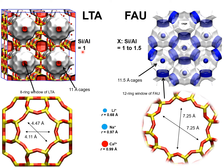The silicon-to-aluminum ratio in LTA zeolites commonly used for air separations is approximately 1, and the extra-framework cations may be either sodium or a mixture of sodium and calcium. In Faujasite-type zeolites, the silicon-to-aluminum ratio varies from 1 to 1.5 — these are also called X-zeolites. They consist of cages of approximately 11.5 angstroms in diameter separated by windows with openings of about 7.5 angstroms.